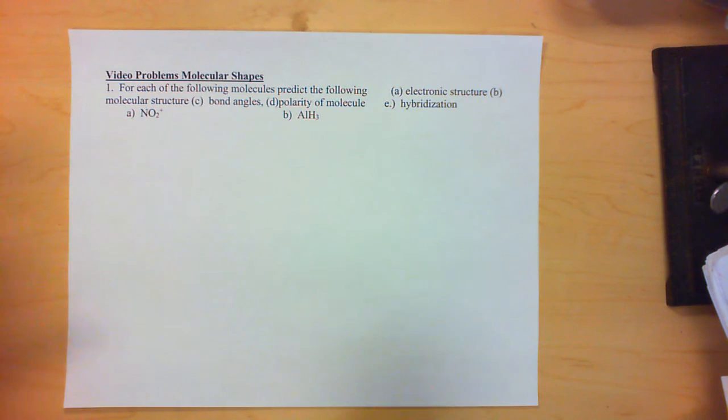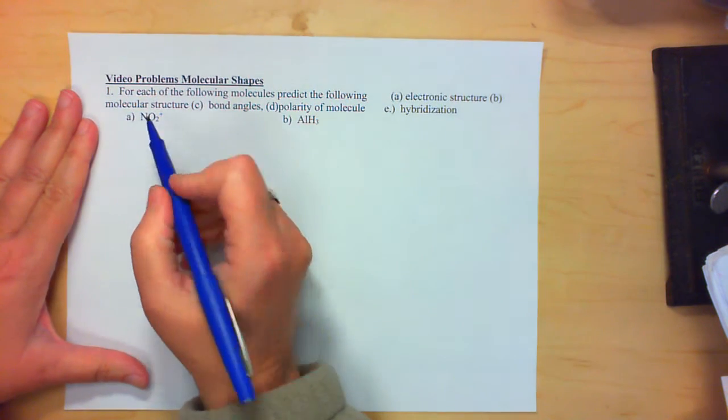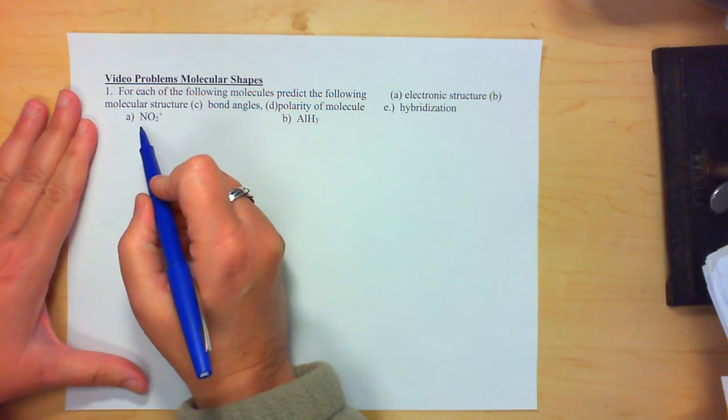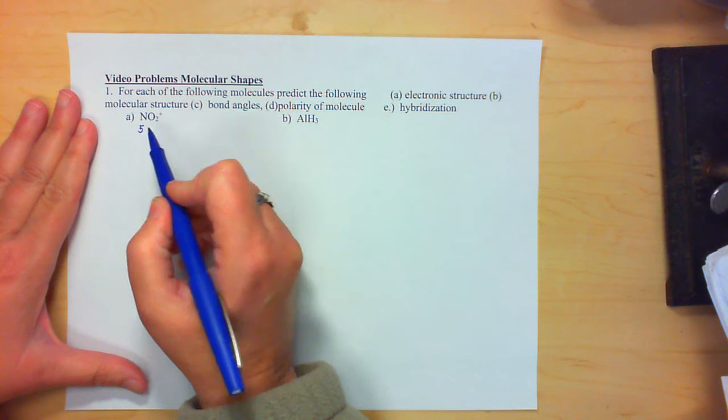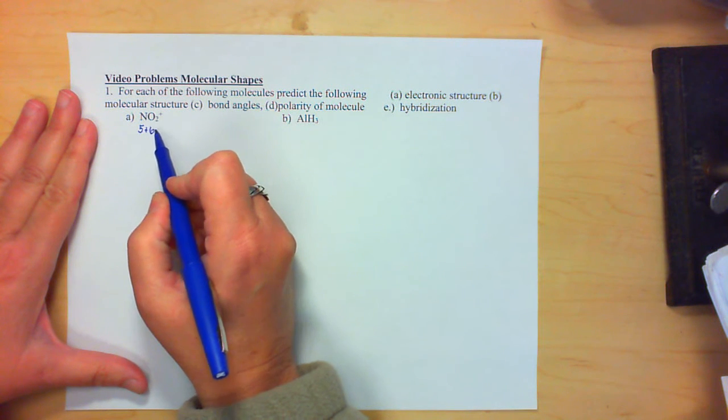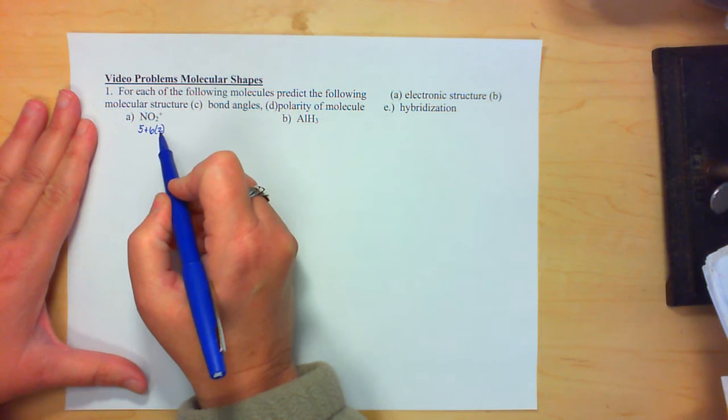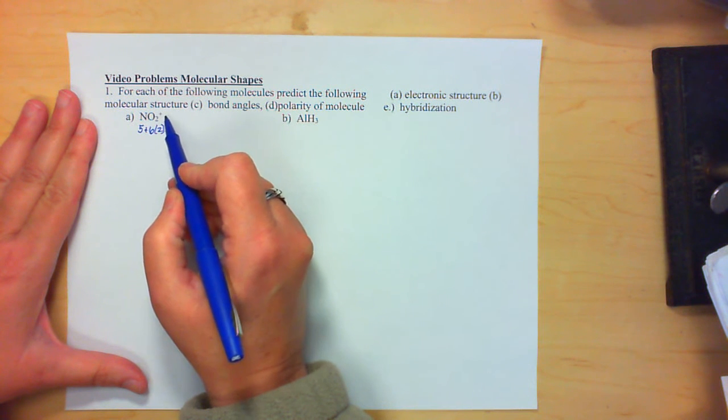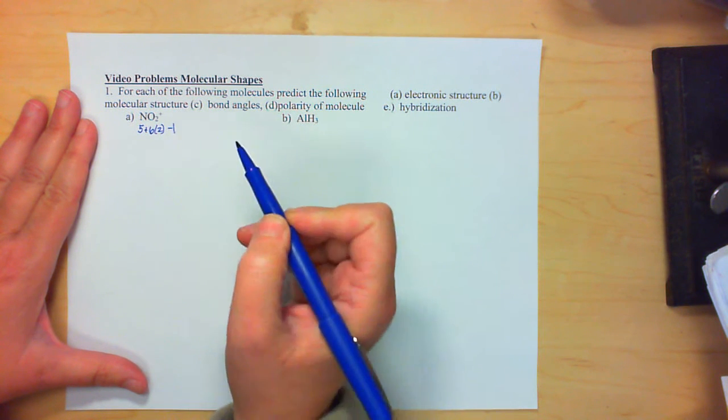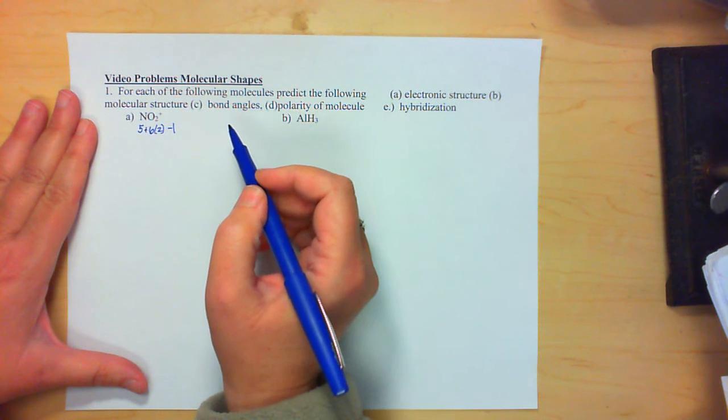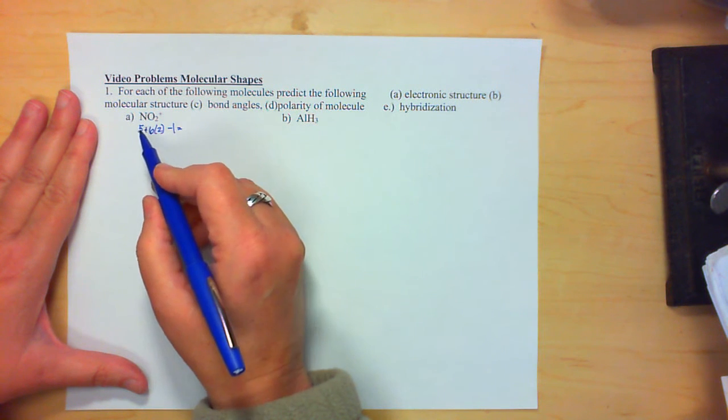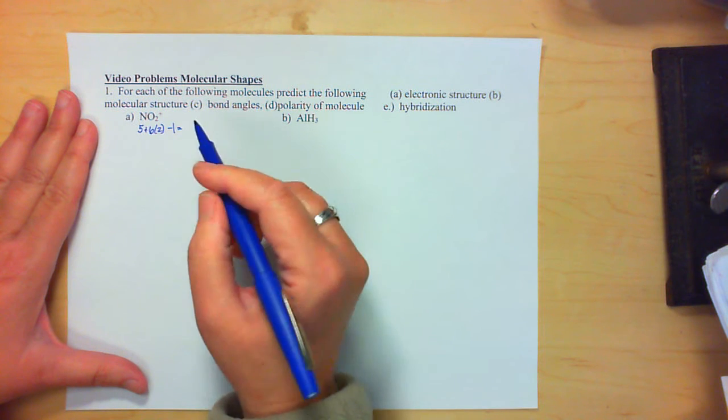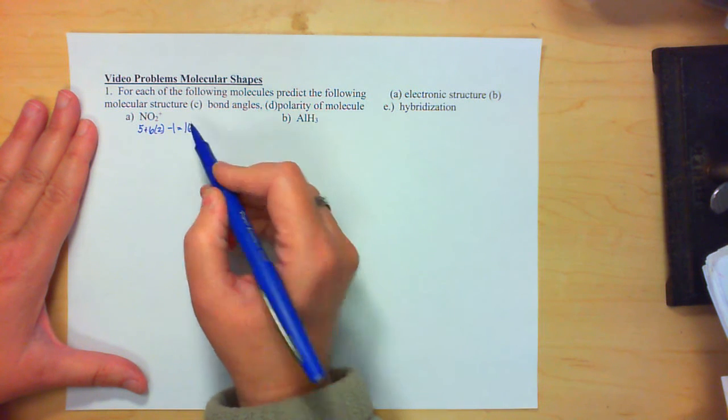So we're going to start off with Lewis structures. In order to do the Lewis structures, we need to add the valence electrons. So nitrogen has five, oxygen has six, but there are two of them, and since we have a positive charge, that means we've lost one. So we have a total of 12 plus 5, which is 17, minus 1, which is 16 electrons.